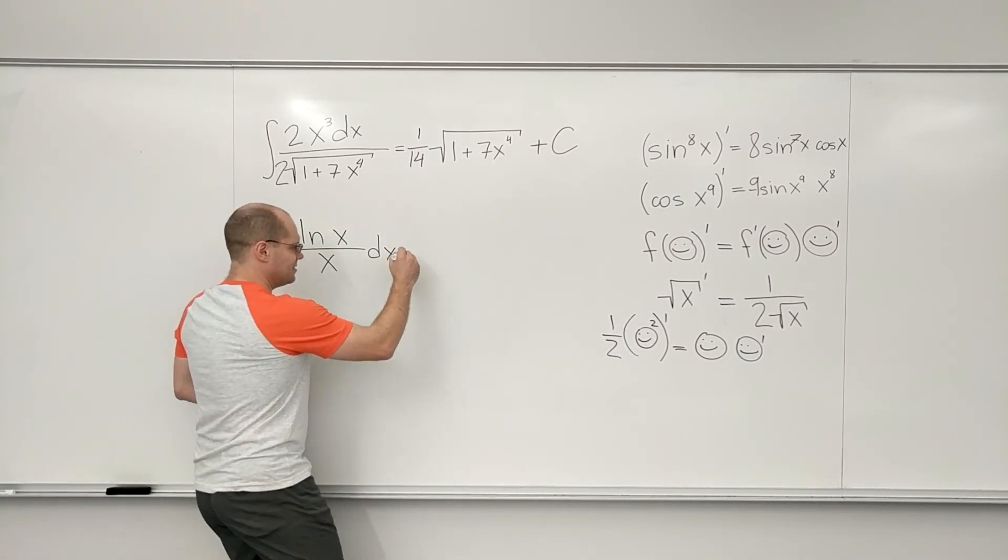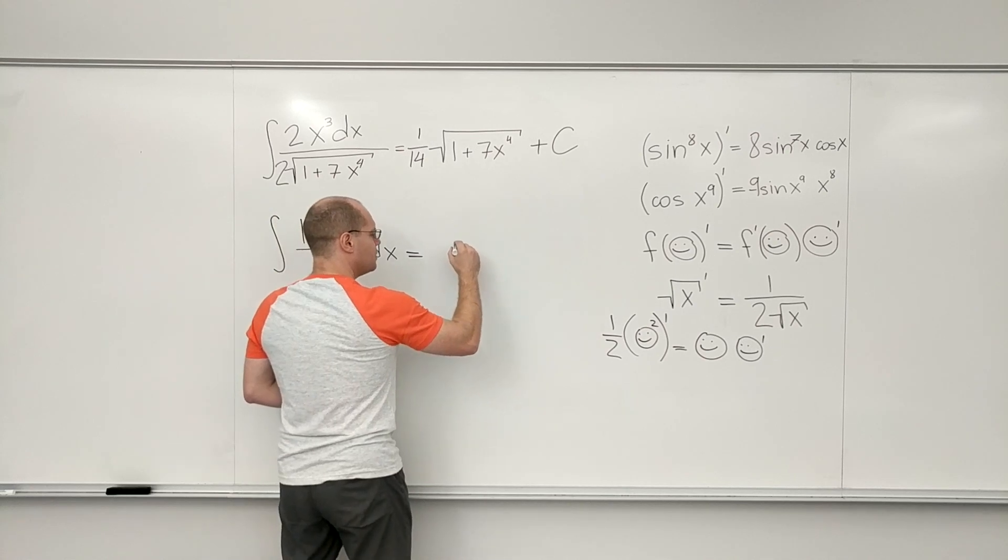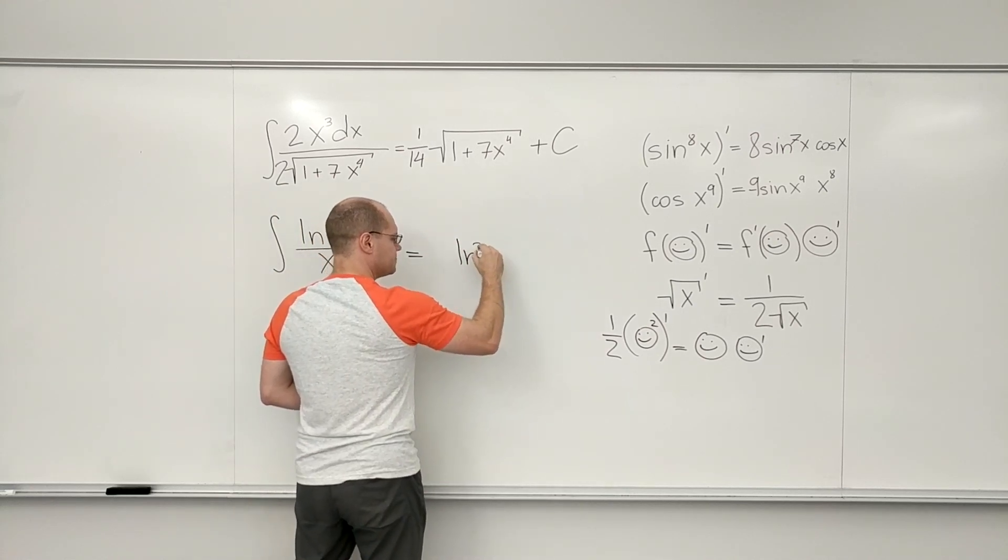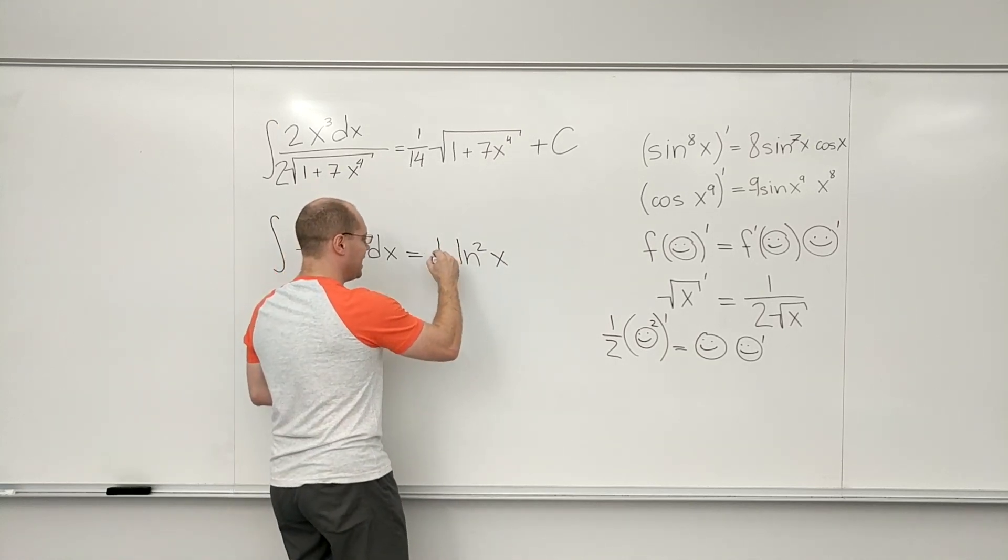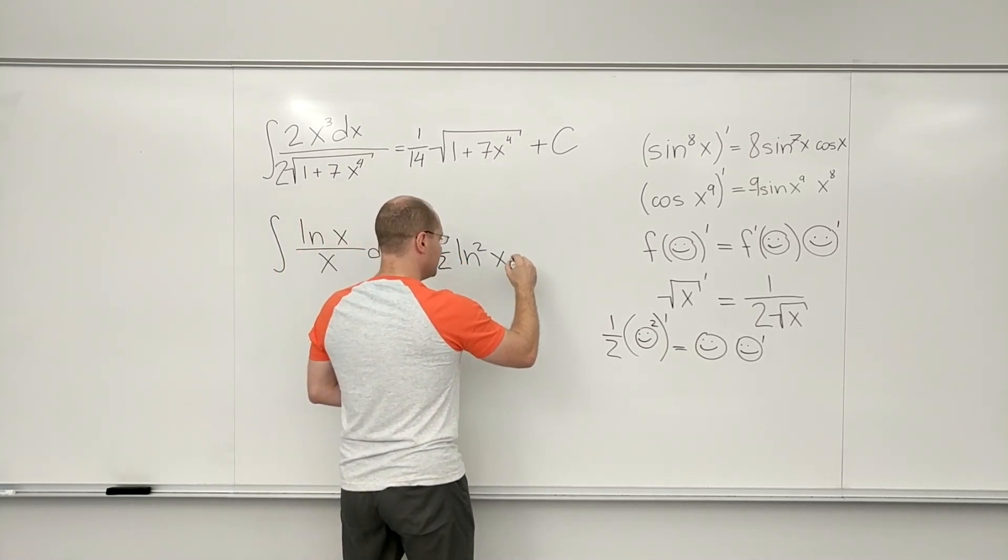So I just realized that this must have come from log squared of x, and log squared of x means log of x squared, with a one-half plus c.